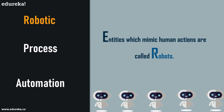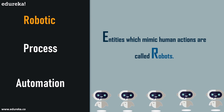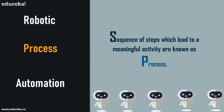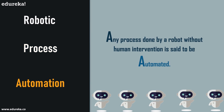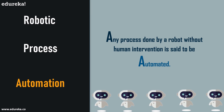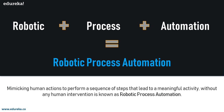Robotic means any entities which mimic human actions — those are robots. Robots mimic human actions, reducing human intervention in industries. Process is basically a sequence of steps which lead to a meaningful activity. Automation is any process done by a robot without any human intervention. Combining all three: mimicking human actions to perform a sequence of steps that lead to a meaningful activity without human intervention is robotic process automation.